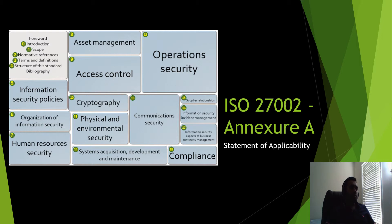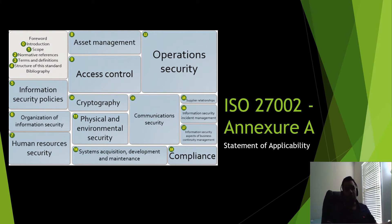Section 14 is system acquisition, development, and maintenance — mostly for software. It covers acquiring software using best practices, change control during development, managing secure development environments, segregation of duties so one person can't access both production and other environments, application security testing, and test data management to ensure production data isn't used in staging without proper controls.